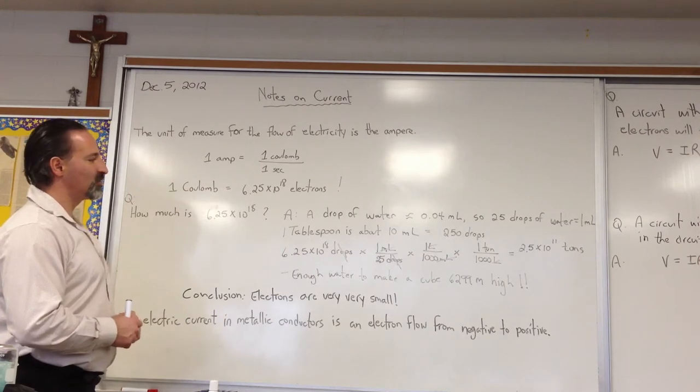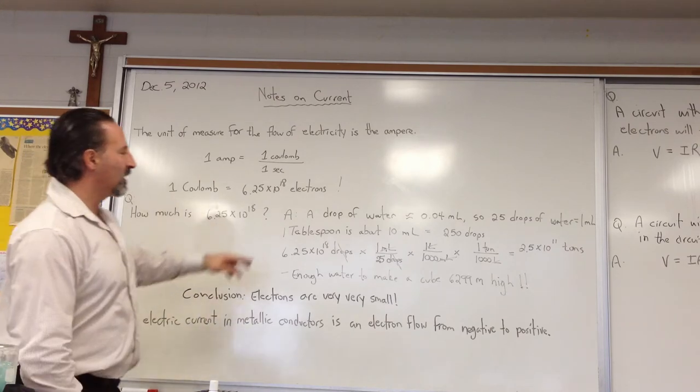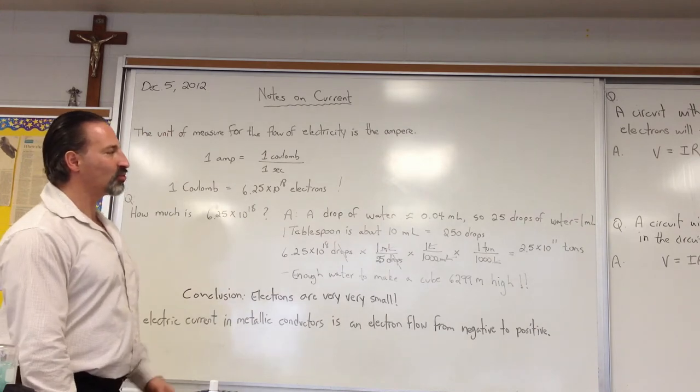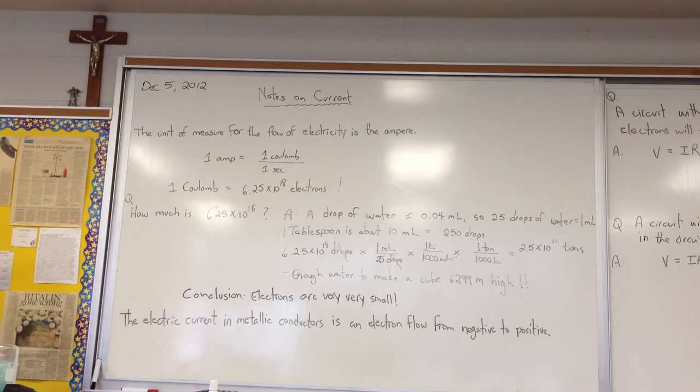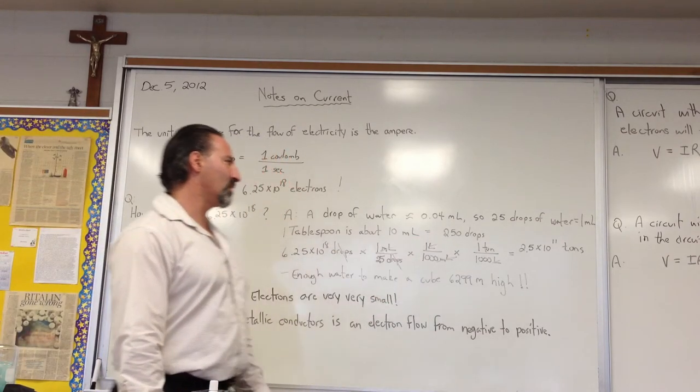So just to help you understand how big of a number it is, I asked how much is 6.25 times 10 to the 18. And I said a drop of water is about 0.04 milliliters. So 25 drops of water equals 1 ml. And a tablespoon is about 10 ml. And 10 ml is about 250 drops.